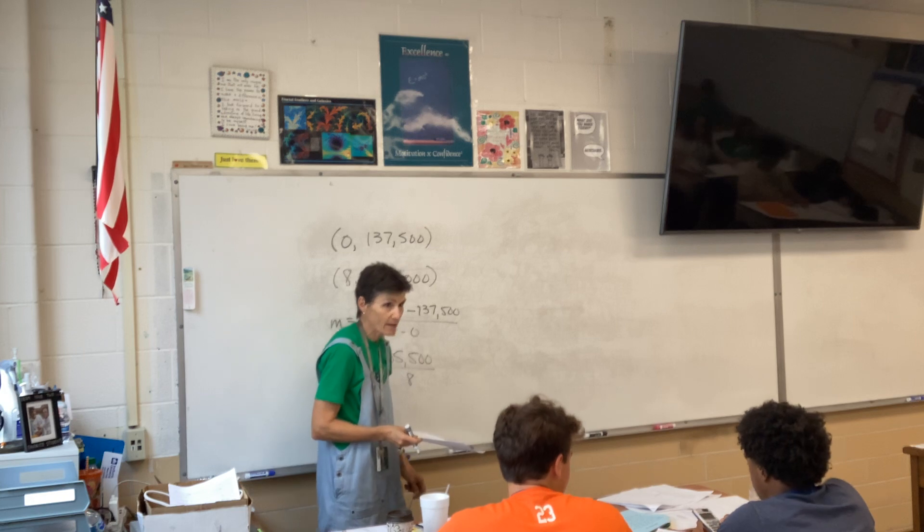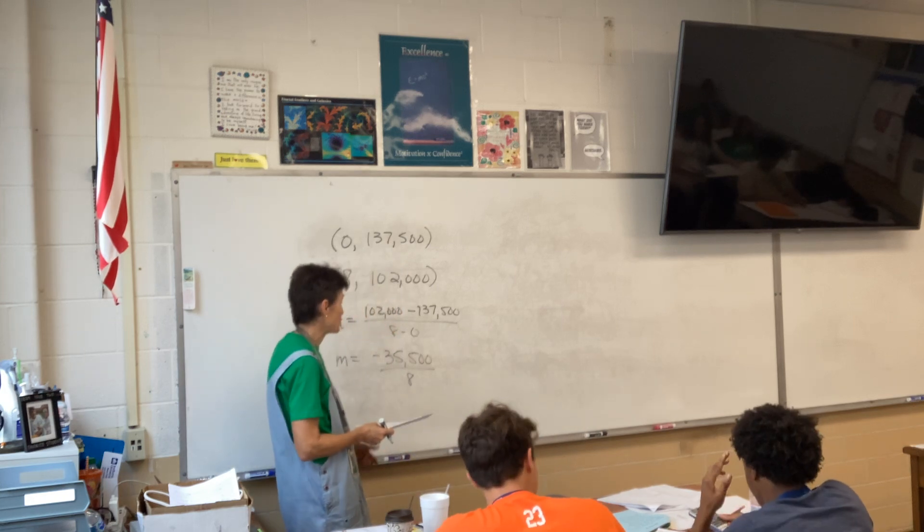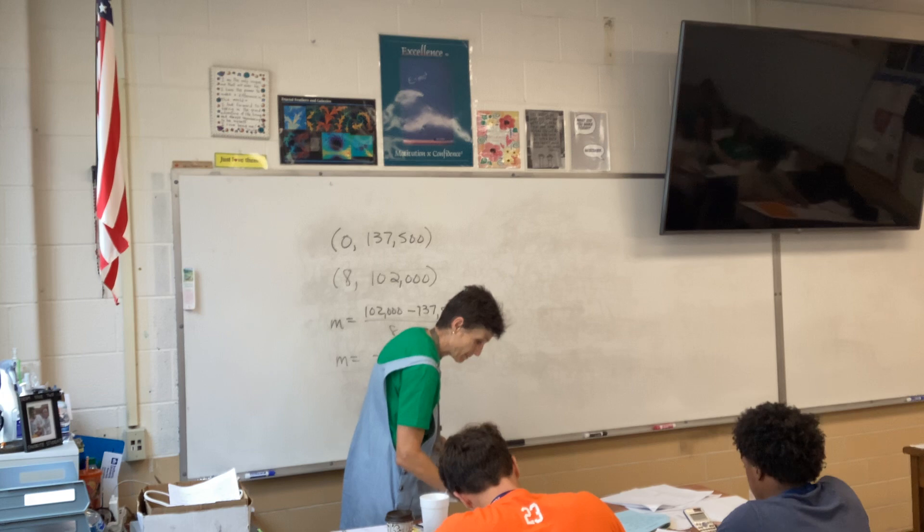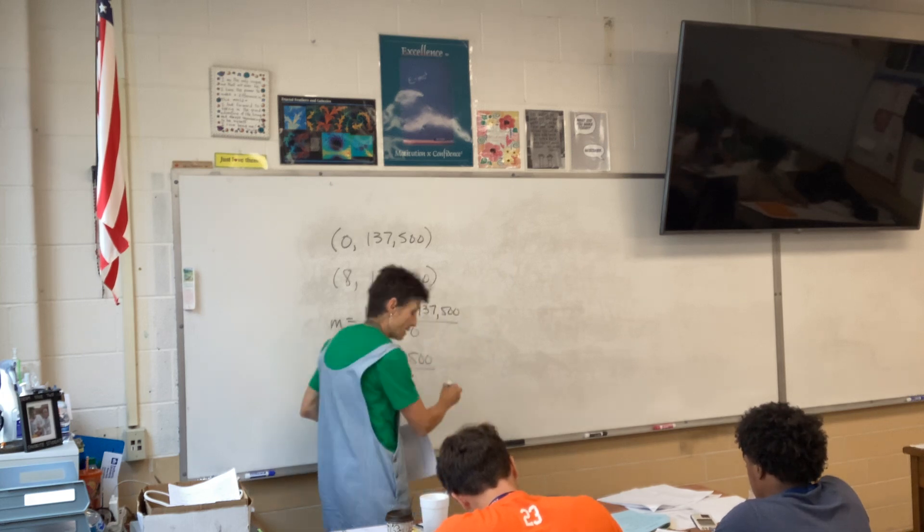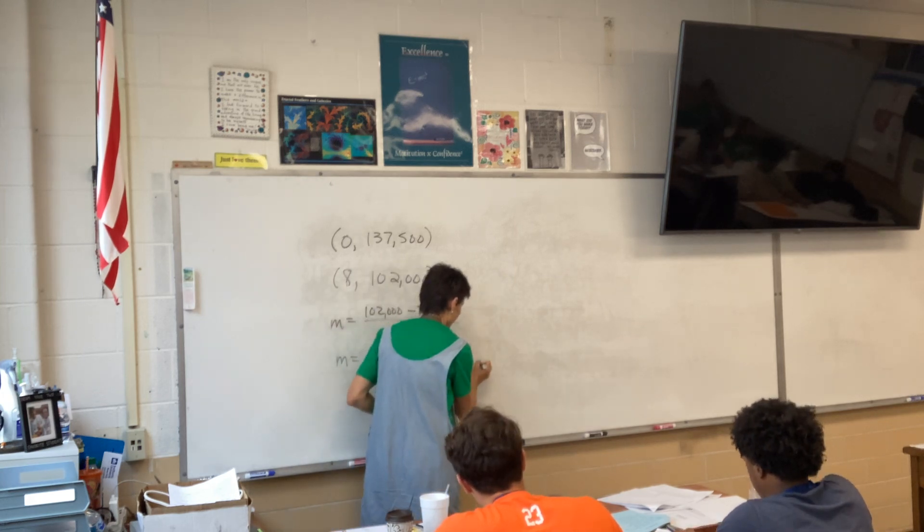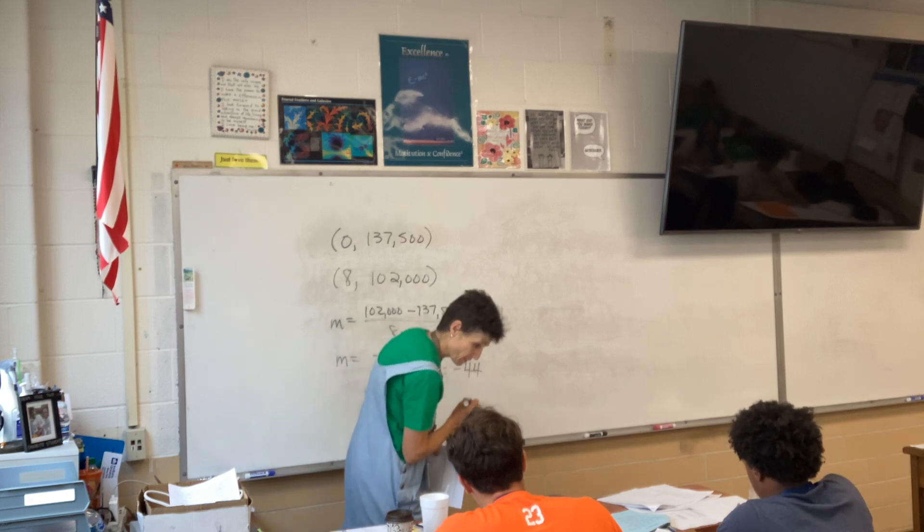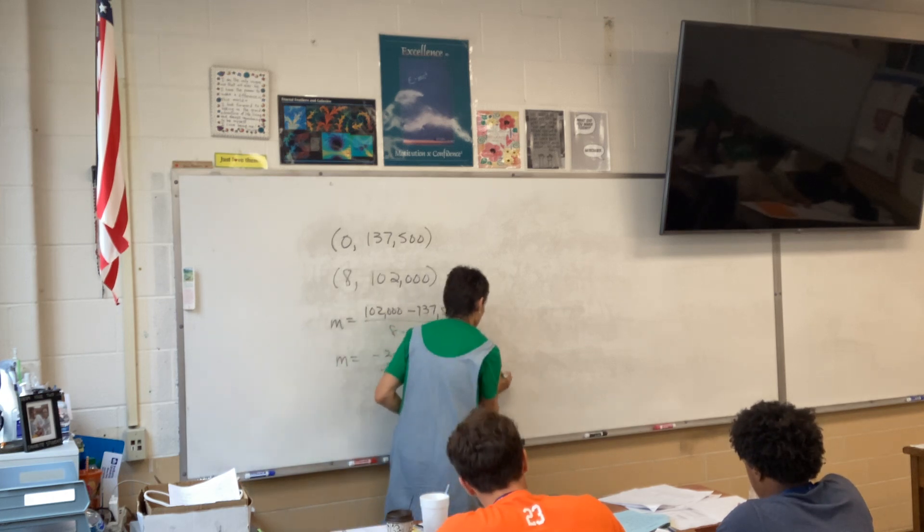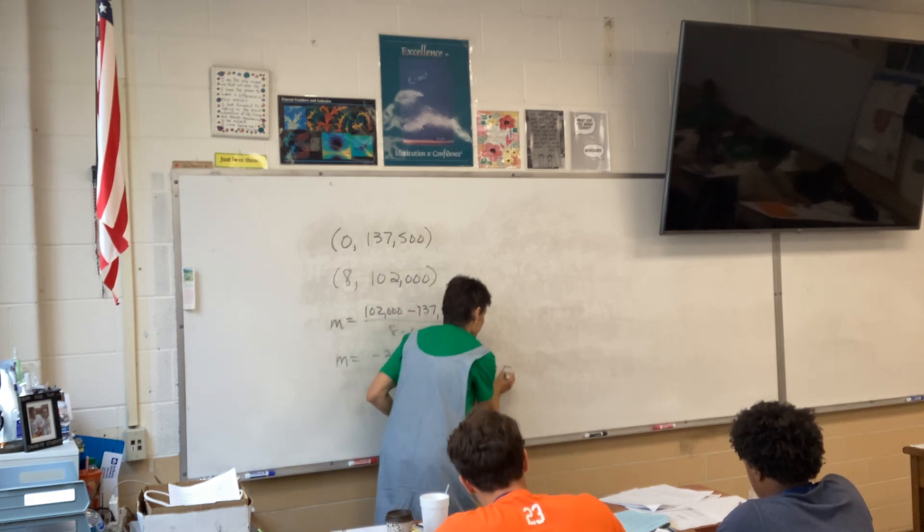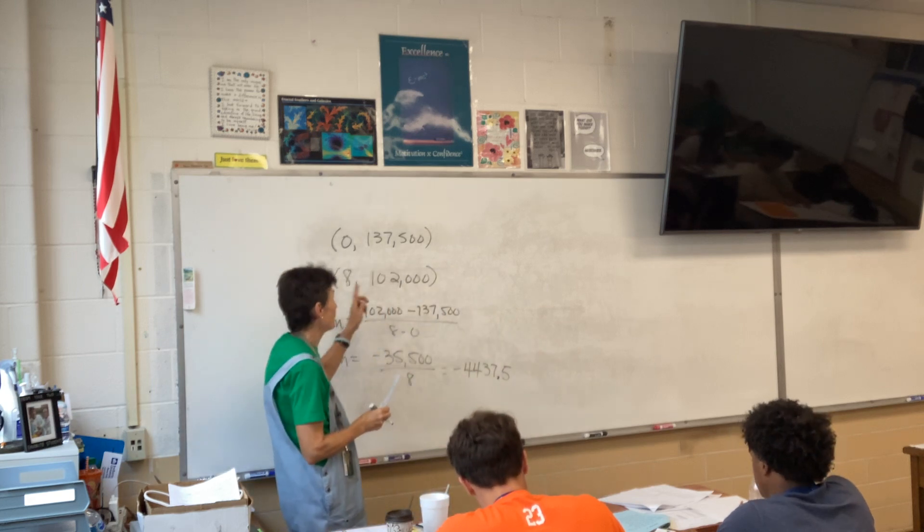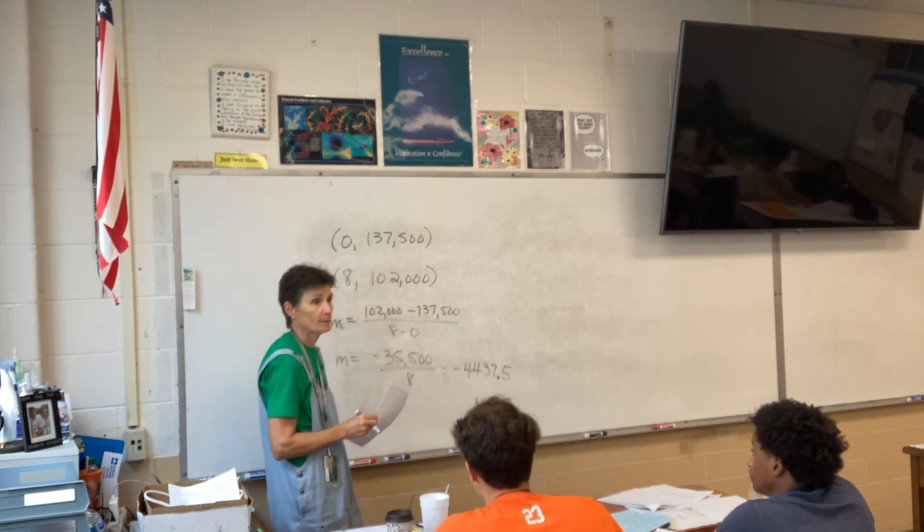The value is going down, right? This house is depreciating. It is going down. So I'm going to divide by eight, and that's negative 4,437.5.